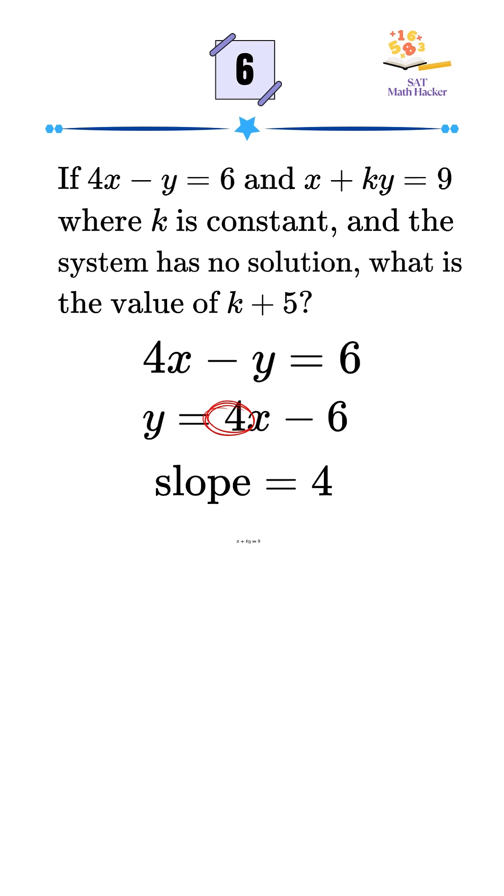Now take the second equation, x plus ky equals 9. Rearranged, that's y equals negative 1 over k times x plus 9 over k. So the slope is negative 1 over k.